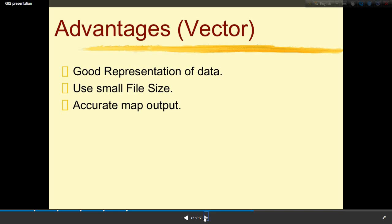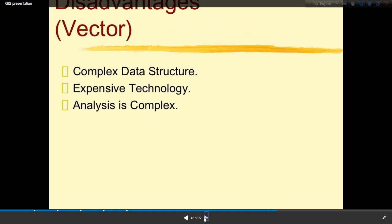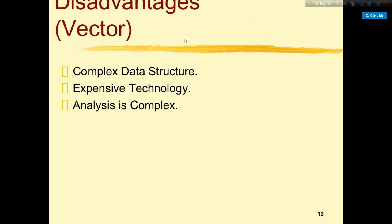The main advantages of vector data are good representation of data, use of small file sizes, and accurate map output. The main disadvantages of vector data are complex data structure, expensive technology, and complex analysis.